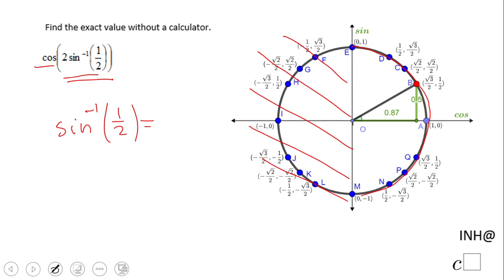And then we need to find whatever the angle is for giving us a sine of one-half. So the angle needs to be 30 degrees, right, in order to have a sine of one-half. That will be pi over six.